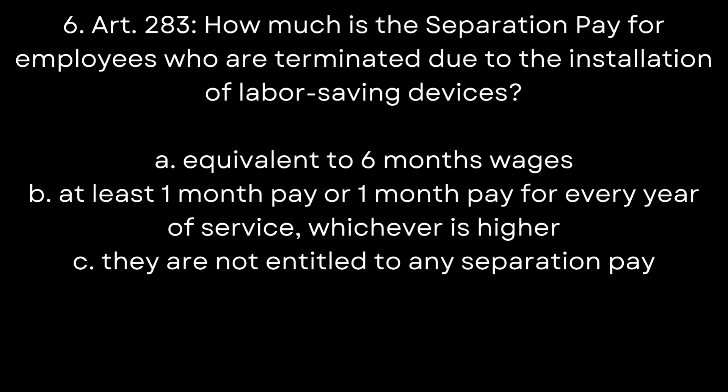Question 6. Article 283. How much is the separation pay for employees who are terminated due to the installation of labor-saving devices? A. Equivalent to six months wages. B. At least one month pay or one month pay for every year of service, whichever is higher. C. They are not entitled to any separation pay. The answer is B. At least one month pay or one month pay for every year of service, whichever is higher.